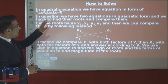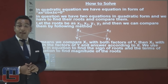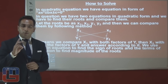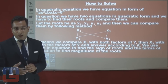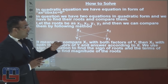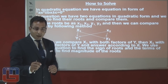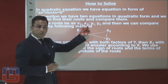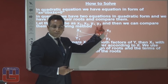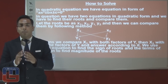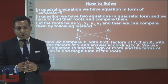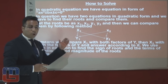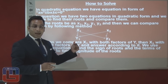When we get any quadratic equation, we know we will have two roots because the power of x is two. In the paper we have two equations, so we will get four roots total — two roots from one equation and two roots from the other. If the equations are in terms of x and y, we get x1, x2, y1, and y2. We then have to compare these roots with each other.